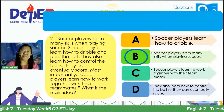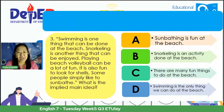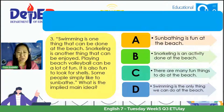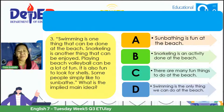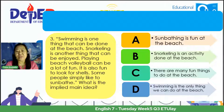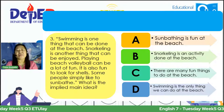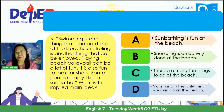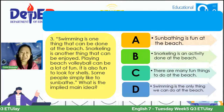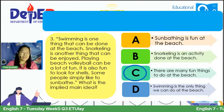Number three: 'Swimming is one thing that can be done at the beach. Snorkeling is another thing that can be enjoyed. Playing beach volleyball can be a lot of fun. It is also fun to look for shells. Some people simply like to sunbathe.' What is the implied main idea? A. Sunbathing is fun at the beach. B. Snorkeling is an activity done at the beach. C. There are many fun things to do at the beach. D. Swimming is the only thing we can do at the beach. Shella and Lance answer C — and the correct answer is letter C.